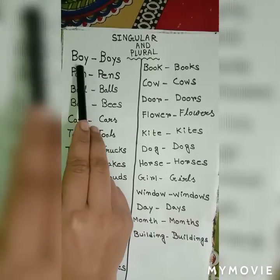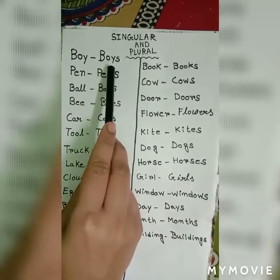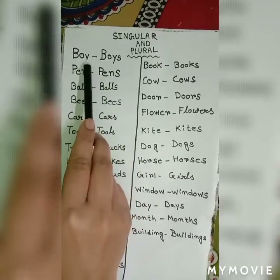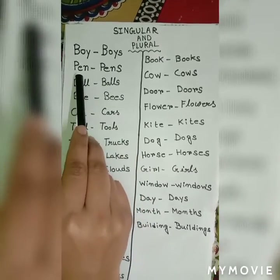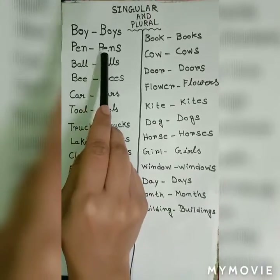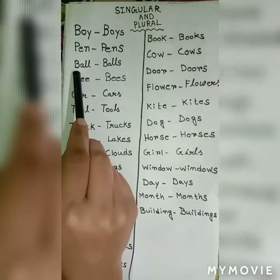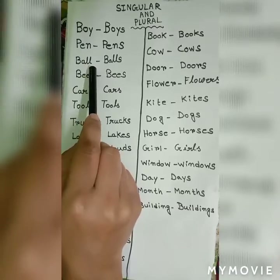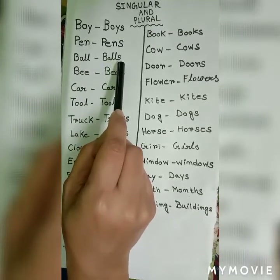B-o-y, boy — b-o-y-s, boys. One boy, many boys. P-e-n, pen — p-e-n-s, pens. B-a-l-l, ball — b-a-l-l-s, balls.